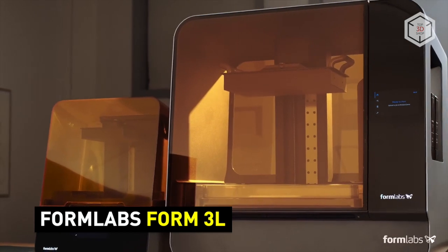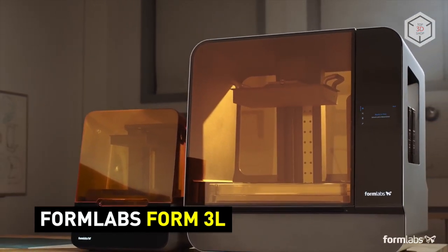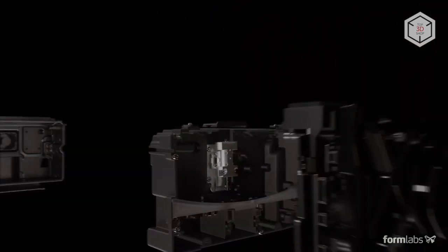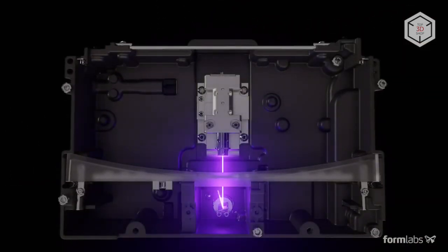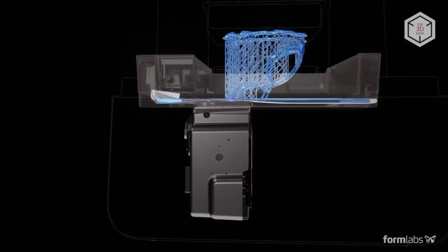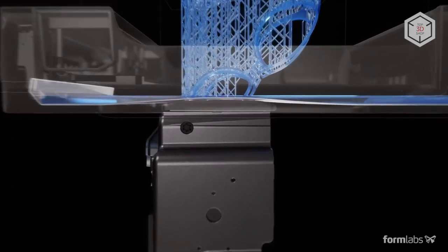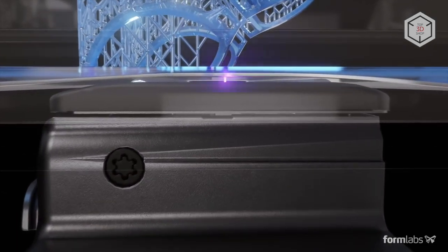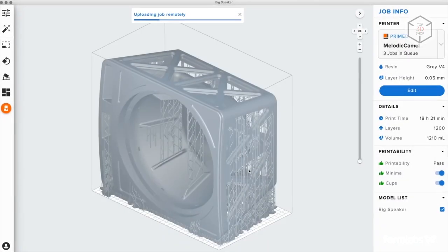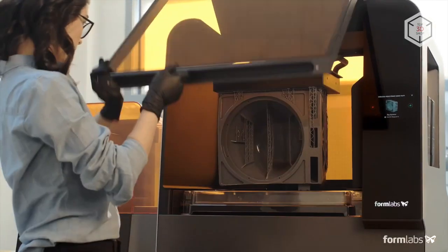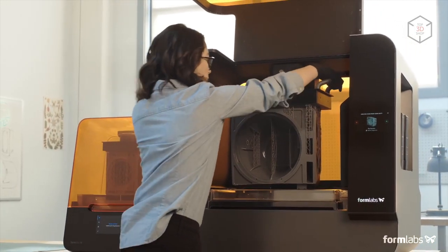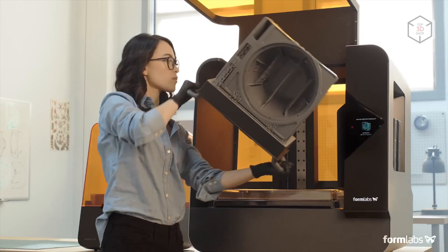The Formlabs Form 3L is a large format resin 3D printer with a build volume of 335 by 200 by 300 millimeters. Based on proprietary LFS technology which stands for low-force stereolithography and is aimed at improving the surface finish of prints, the Form 3L features a convenient 5.5 inch full-color display. The pre-form free print preparation software automatically suggests optimal print settings that can be manually adjusted if needed. The device allows for cloud monitoring of the printing process. The connectivity options include Wi-Fi, Ethernet and USB.